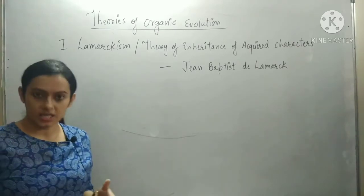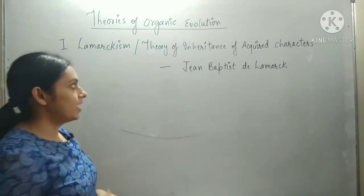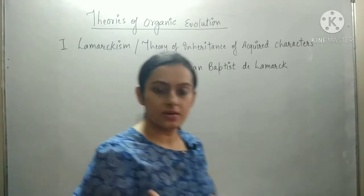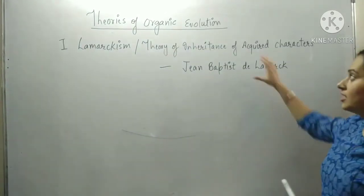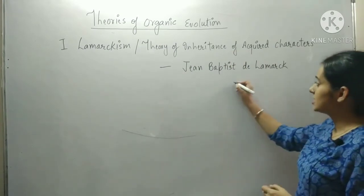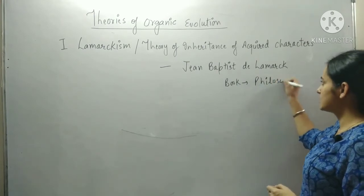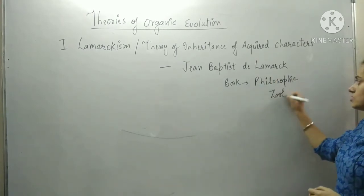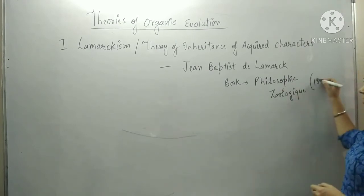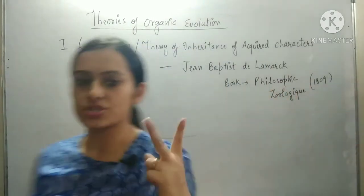Next we will study the theories of organic evolution. The first theory is Lamarckism, called the theory of inheritance of acquired characters. It was given by Jean Baptiste de Lamarck, who also explained the theory of evolution. Everything was discussed in a book called Philosophie Zoologique, published in 1809. Lamarck had three postulates.